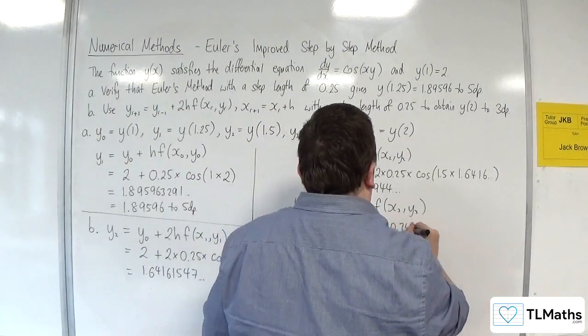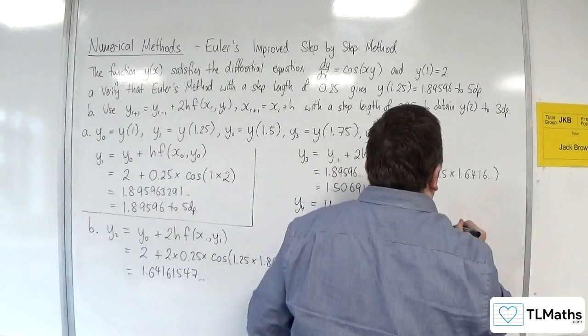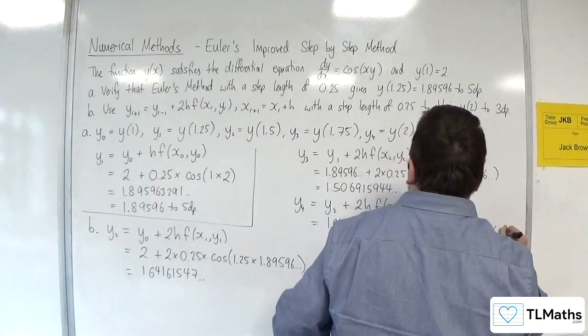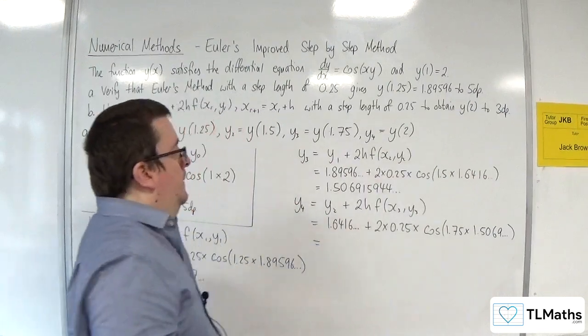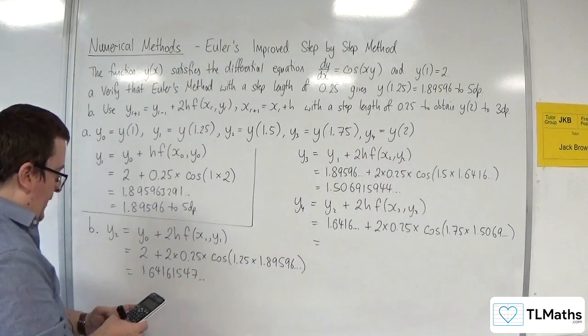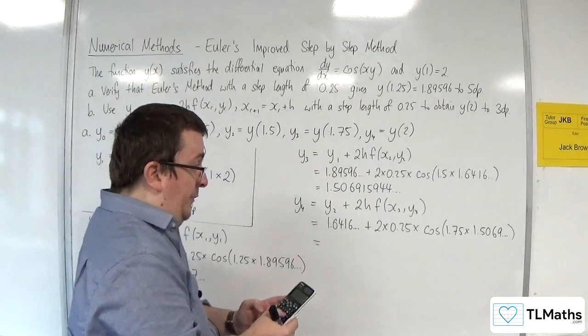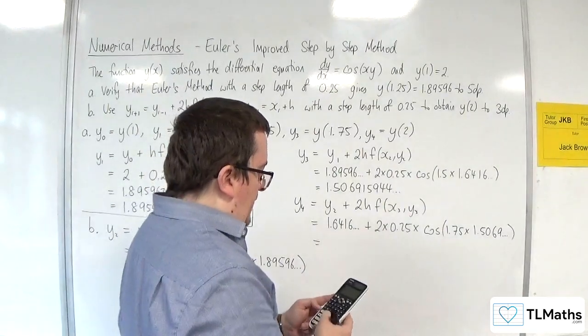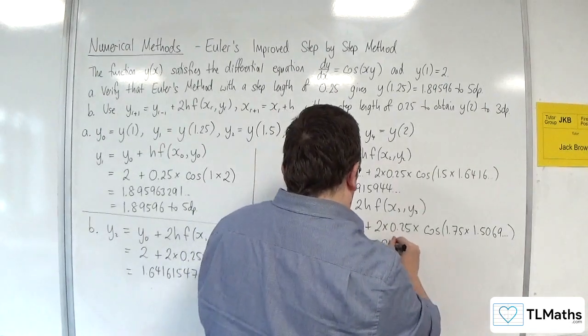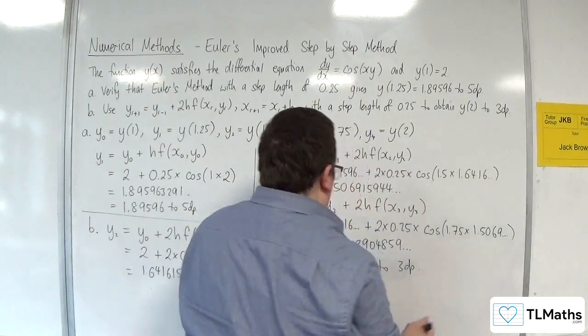Plus 2 lots of 0.25 times cosine of x3, which is 1.75, times by y3, which is the 1.5069, etc. Okay, so we've got the 1.64161547 plus 2 lots of 0.25 times cosine of 1.75 times the answer key, and I'm getting 1.203904859, which is 1.204 to 3 decimal places.